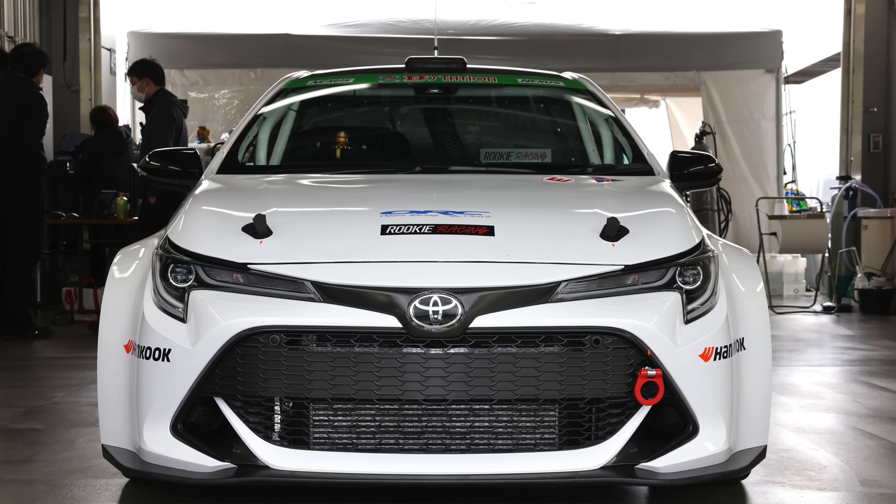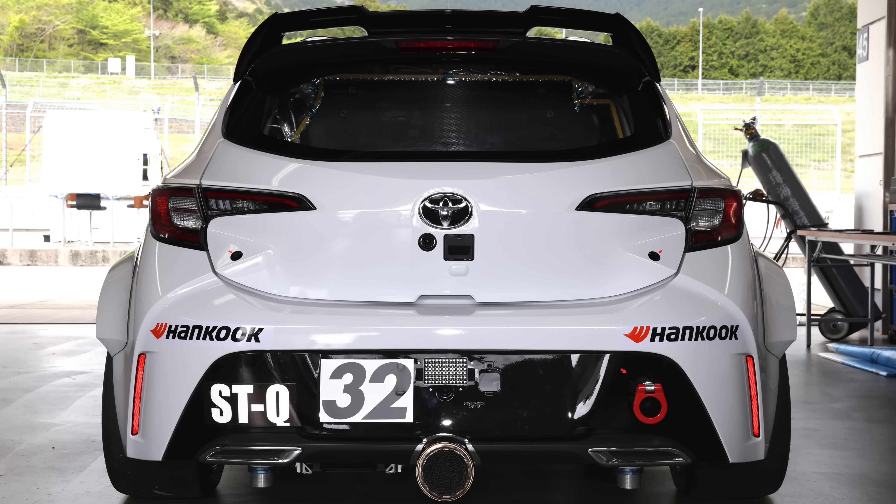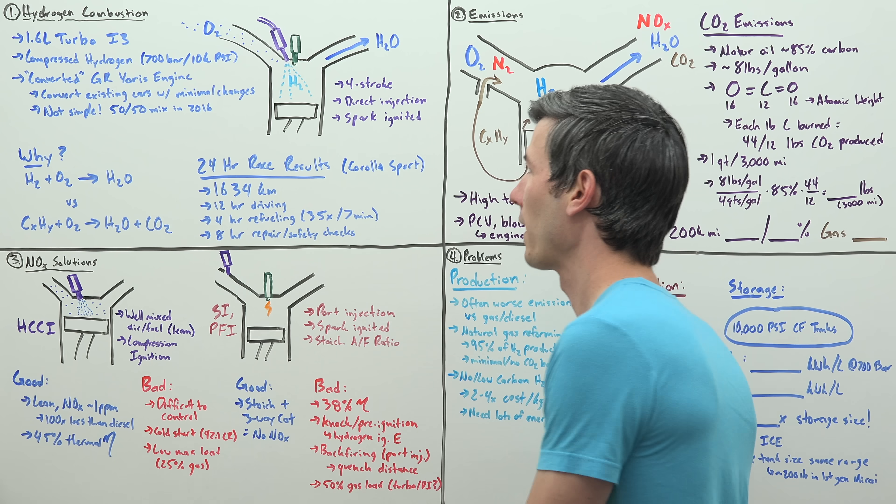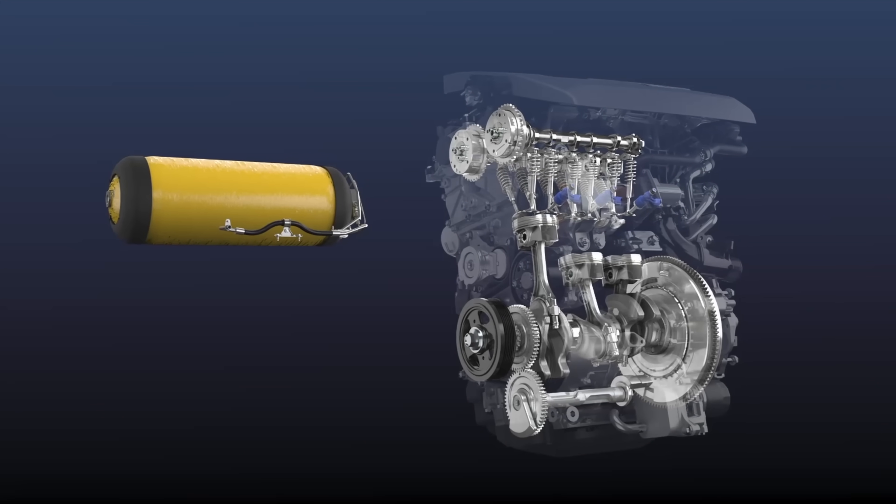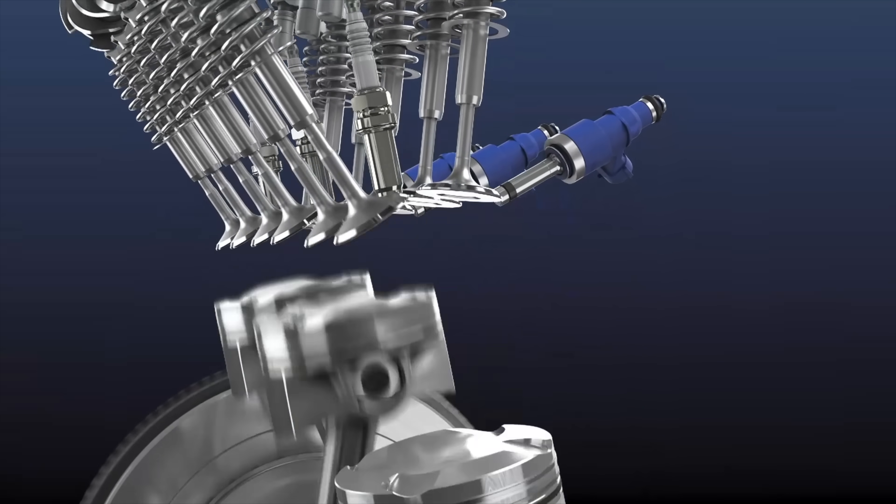Toyota created a Corolla Sport that was powered by a hydrogen combustion engine and entered it into a 24-hour endurance race. This is powered by a 1.6 liter turbocharged inline three-cylinder that comes from the GR Yaris, converted over to run on hydrogen.